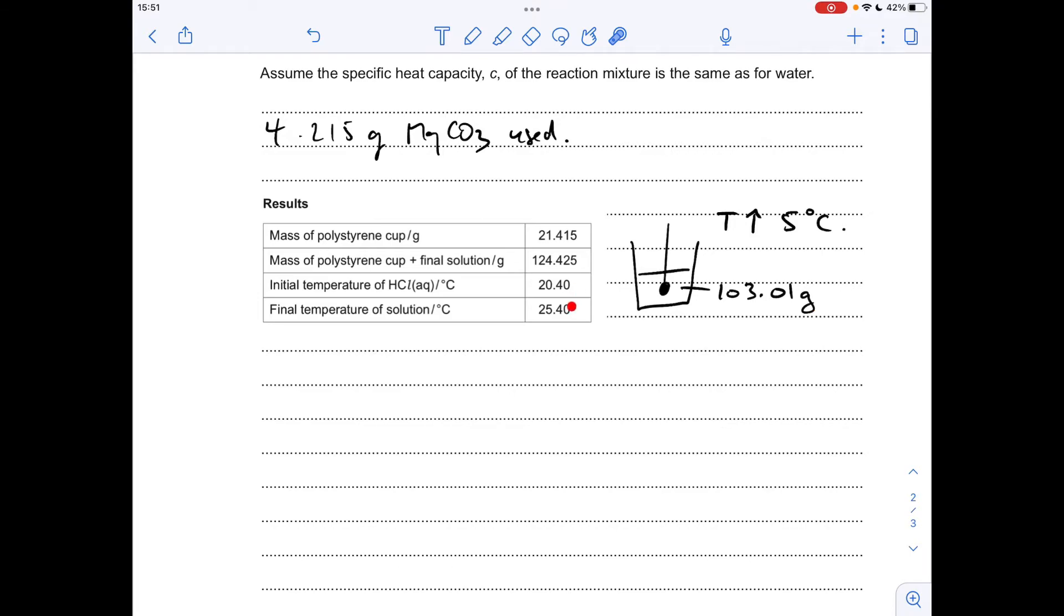The temperature has gone up, so it's an exothermic reaction by 5 degrees C, and that many grams of magnesium carbonate was used. So the first thing we're going to do is calculate the energy change in the solution.